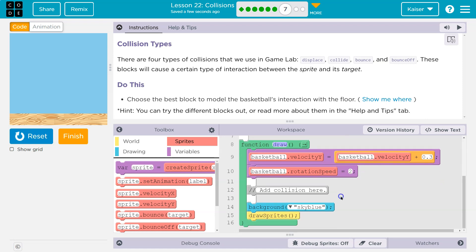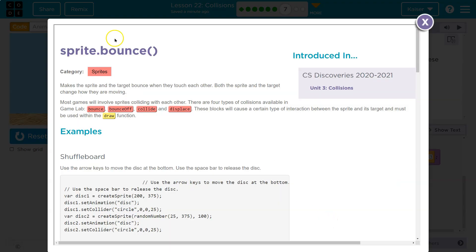All right, so here's the basketball's velocity and a rotation speed. Hint: you can try out different blocks or read more about them in help and tips. If I hover over a block, like bounce off, and click see examples, it will give me a ton of info.